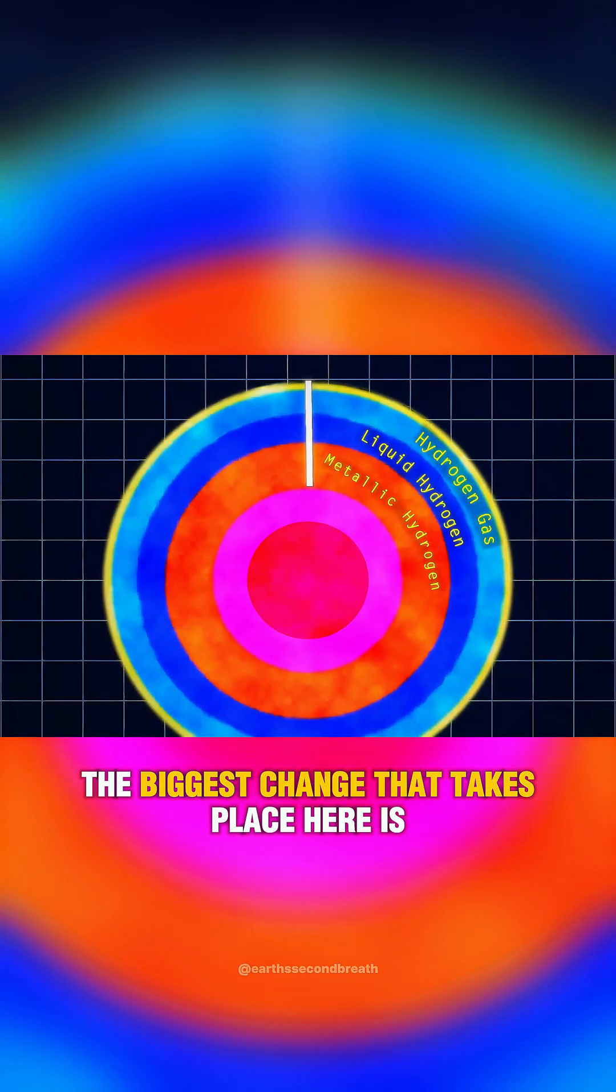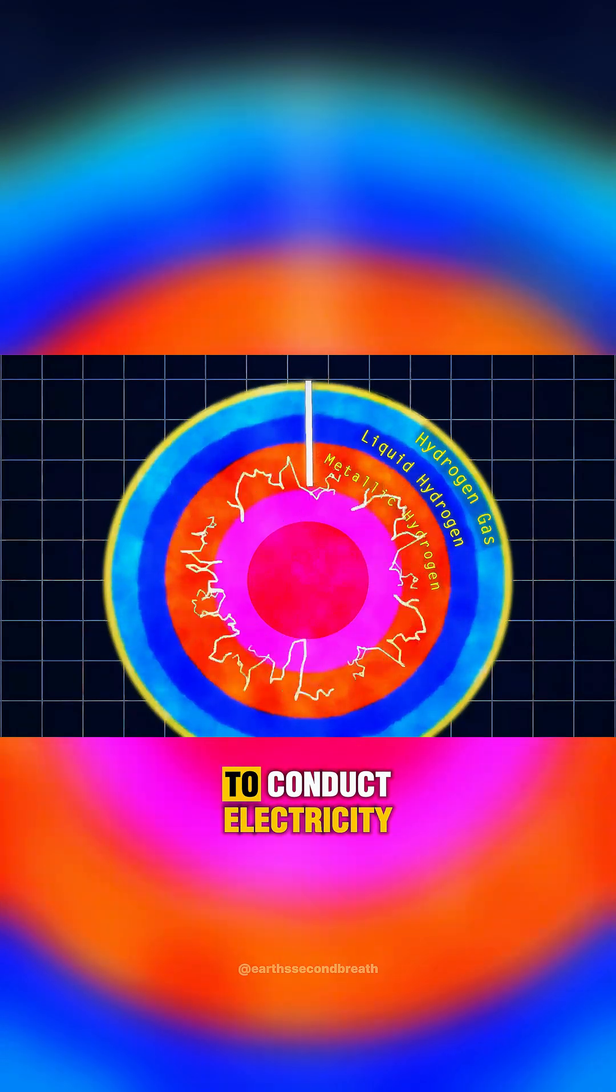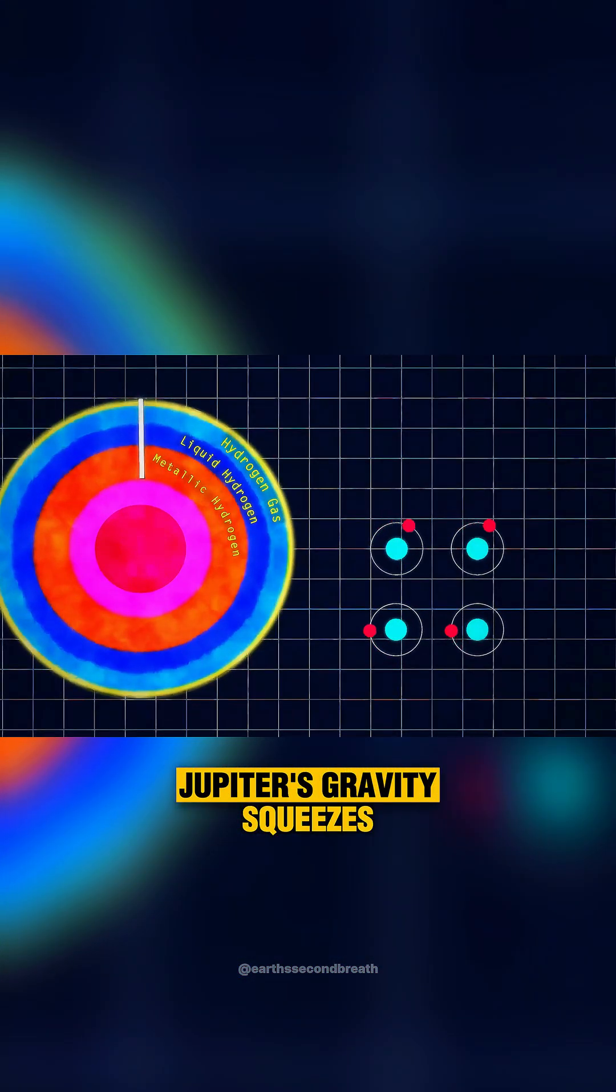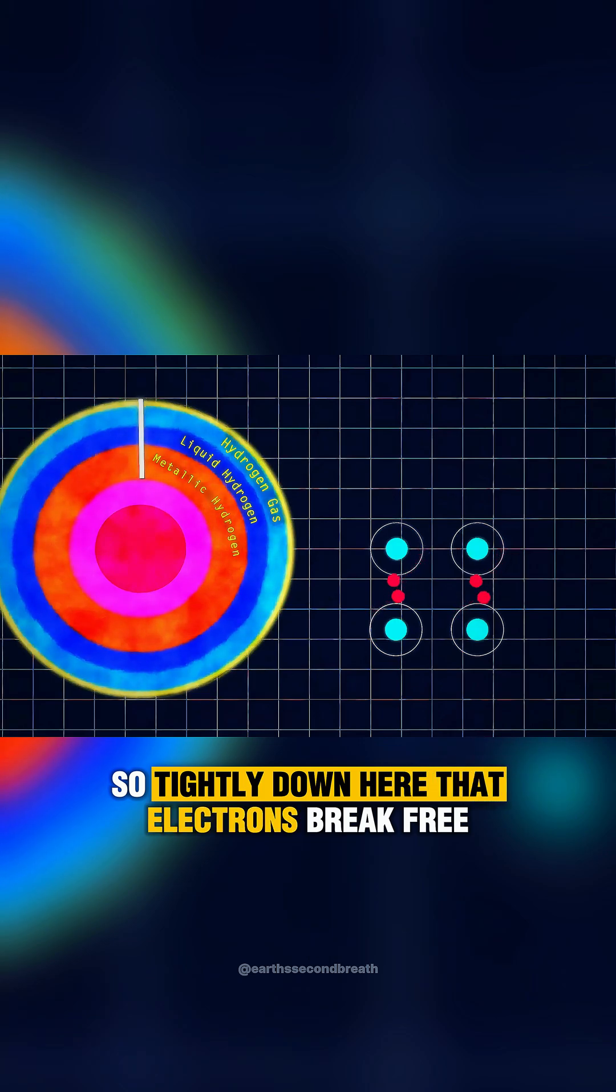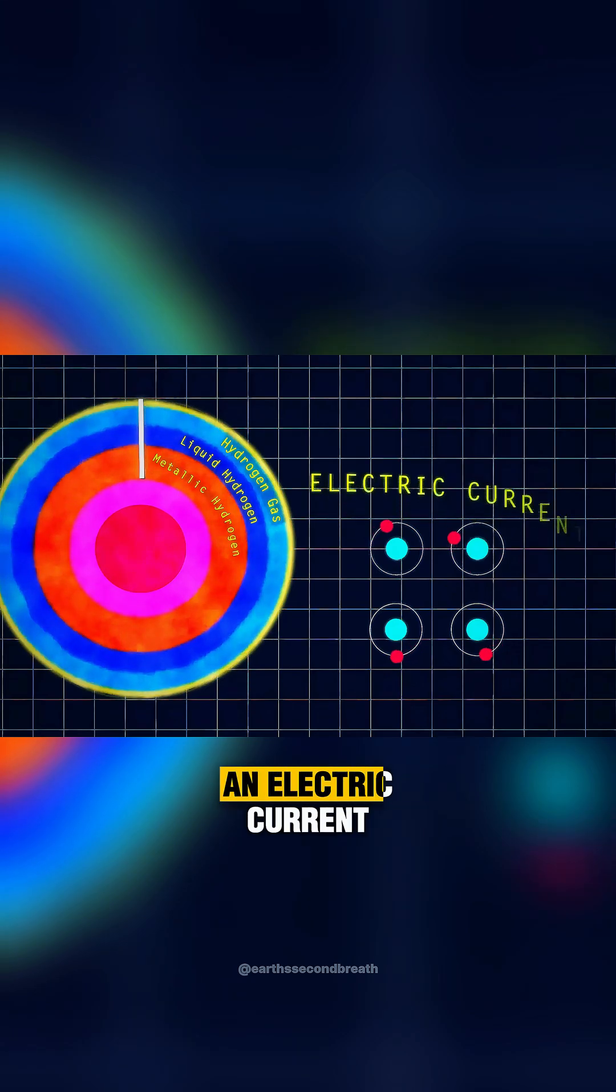The biggest change that takes place here is that metallic hydrogen now has the ability to conduct electricity. Jupiter's gravity squeezes so tightly down here that electrons break free from the hydrogen atoms and flow freely throughout the liquid, generating an electric current.